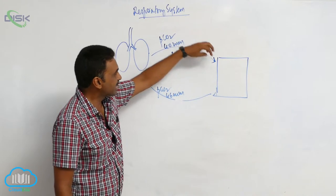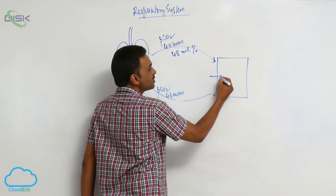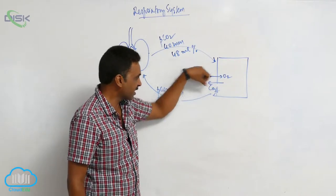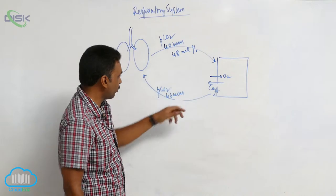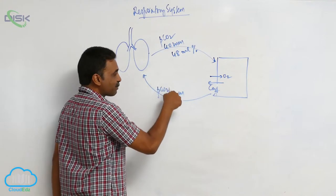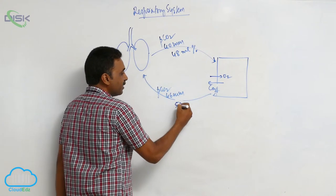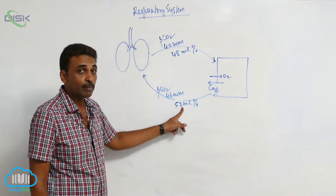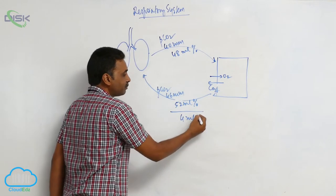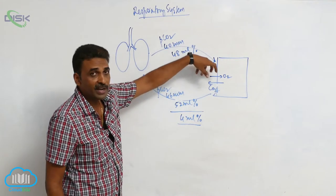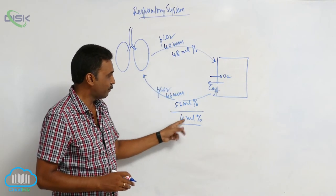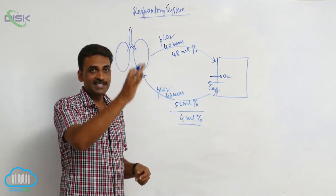When such blood comes towards the tissues, there is an exchange of gases — oxygen is taken and carbon dioxide is added. After the exchange of gases is over, the partial pressure of carbon dioxide in the venous blood is 46 millimeters of mercury, and under this partial pressure there is 52 ml of carbon dioxide for every 100 ml of blood. The difference between the two is 4 ml percent, meaning for every 100 ml of blood coming to the tissues, 4 ml of carbon dioxide is added. That 4 ml difference is delivered at the lungs and exhaled out.